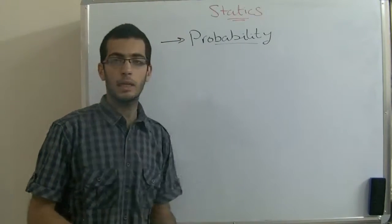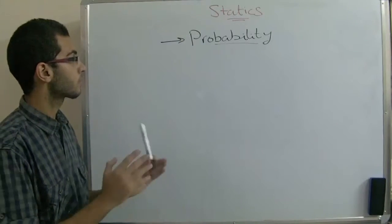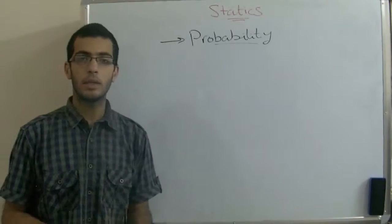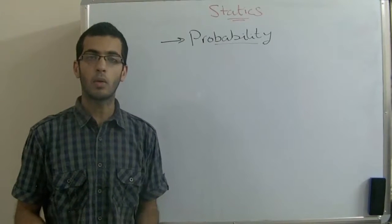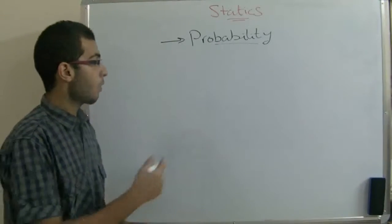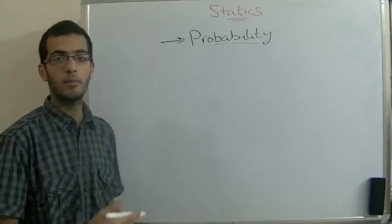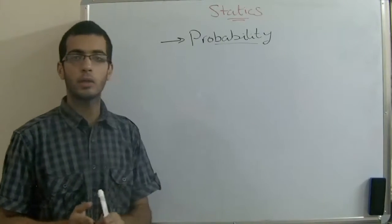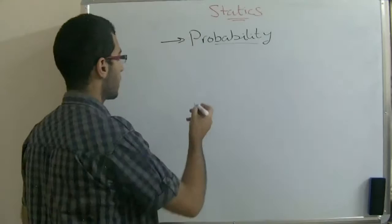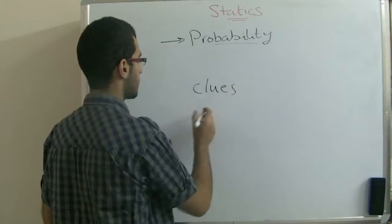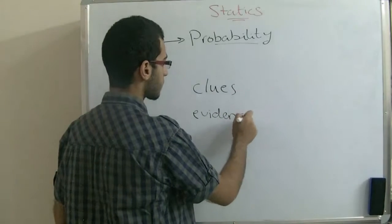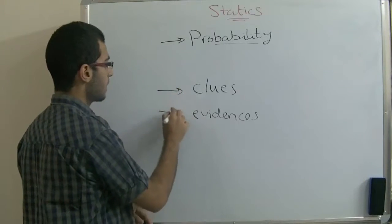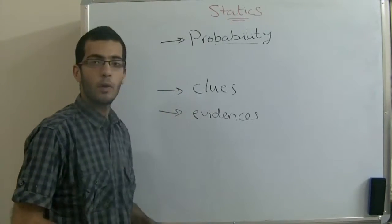Probability is a common, widely known term in our lives. For example, we can say that today it's probable that it will rain, or if you walk into this street, you probably may meet your friend. Probability is built on some kind of clues and evidences that let you say that something is probable or something is going to happen from your prediction.